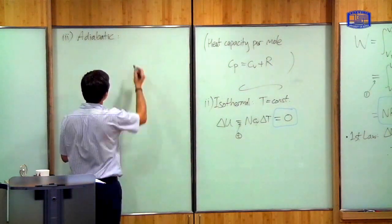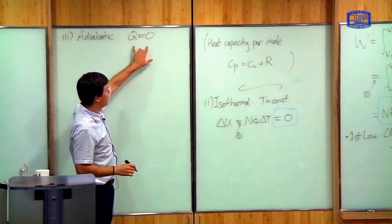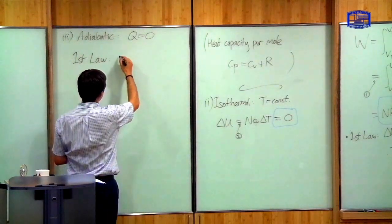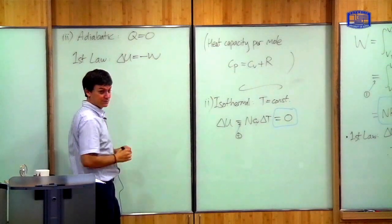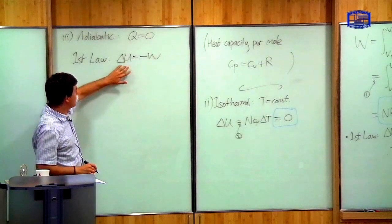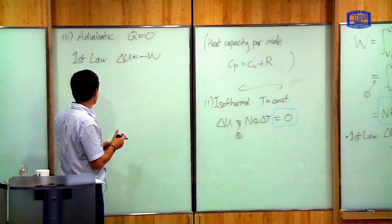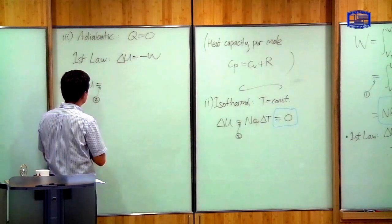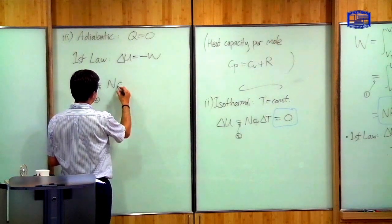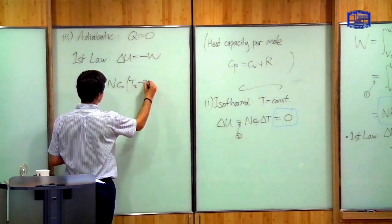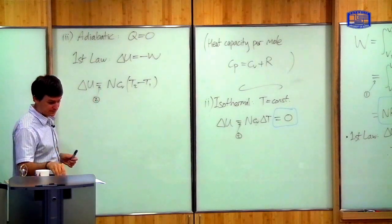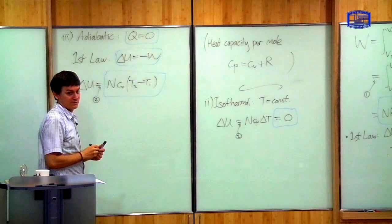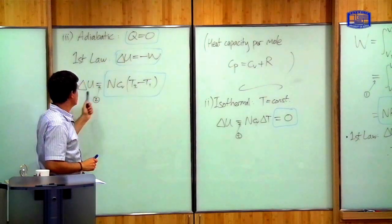The adiabatic expansion is defined by the condition that there is no heat transfer, so Q = 0 immediately. The first law tells you that ΔU = −W. So if you calculate the change in internal energy, you immediately know the work done as well. Using the second equation of state, ΔU = N·CV·(T2 − T1), and W = −ΔU.